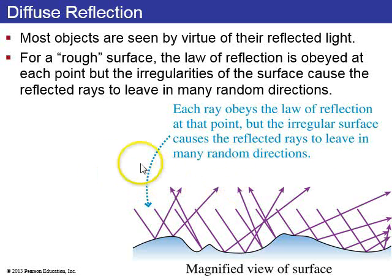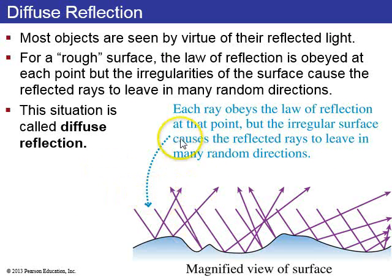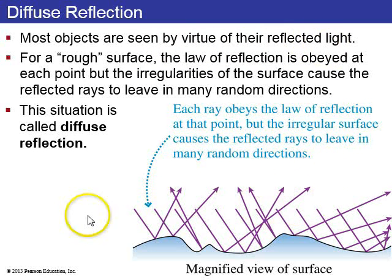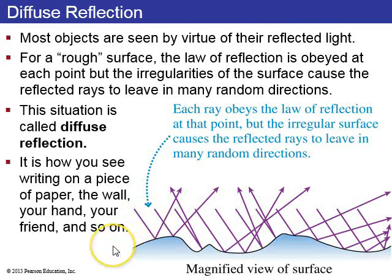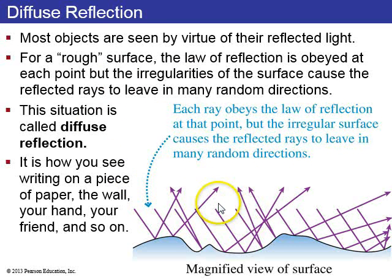In diffuse reflection, the surface on a microscopic level is rough, which means that an incoming parallel bundle of rays gets scattered when reflected so they're no longer parallel. Most objects are seen because of diffuse reflection of light on their surface — writing on a piece of paper, the wall, your hand. You have some light coming from a source like the sun, and it diffusely reflects off the surface, so some of these rays make it into your eye.